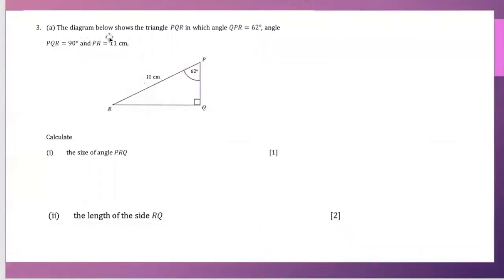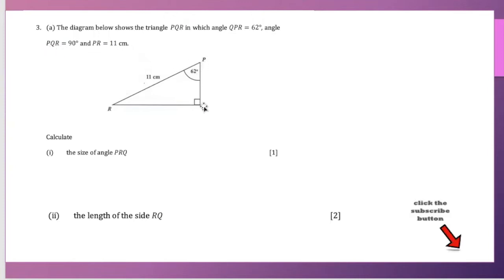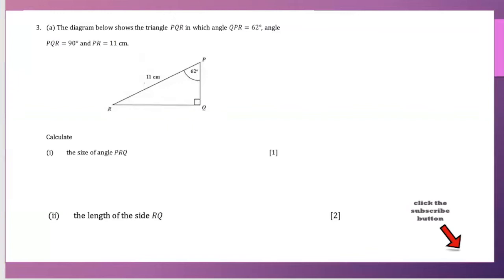The diagram below shows triangle PQR in which angle QPR is 62 degrees, angle PQR is 90 degrees, which is a right angle triangle, and PR is equal to 11 centimeters. Calculate the size of angle PRQ.